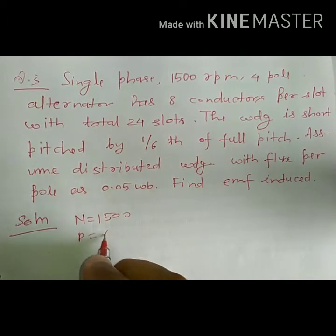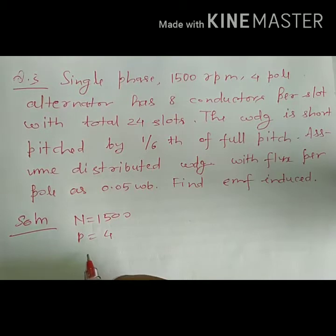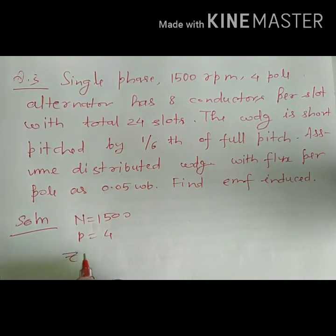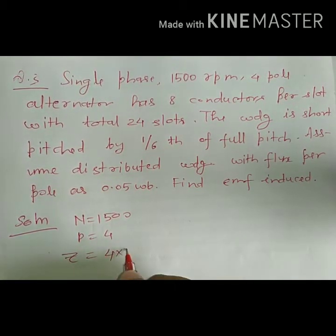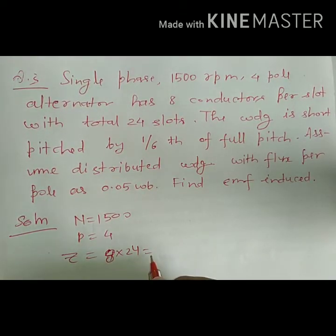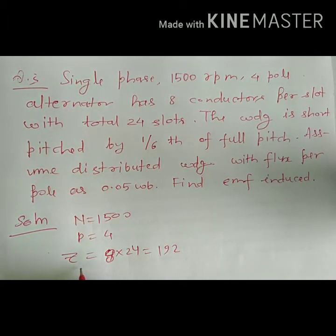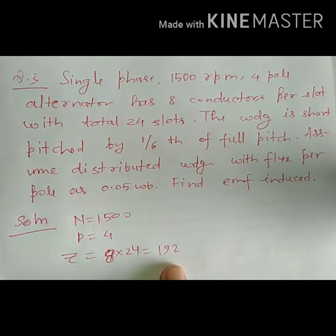Speed is 1500 rpm, number of poles is 4, 8 conductors per slot, and total slots are 24. So Z equals 8 into 24, that will be 192. As it is a single-phase machine, Z is nothing but Z_ph — we need not divide it by the number of phases to get Z_ph.